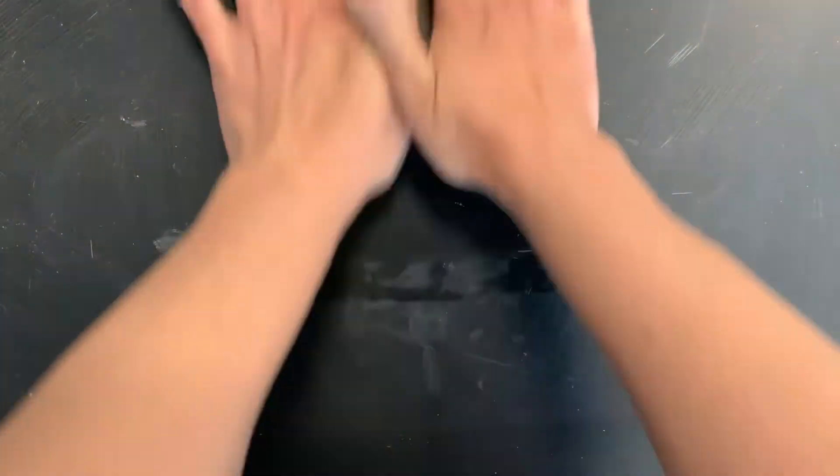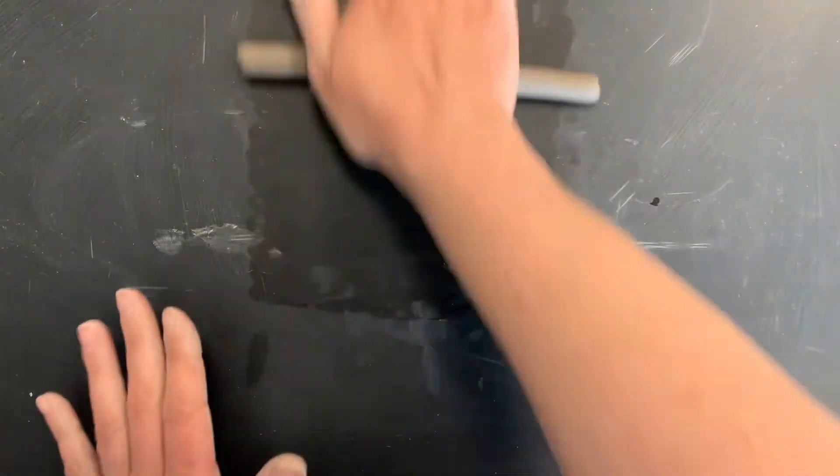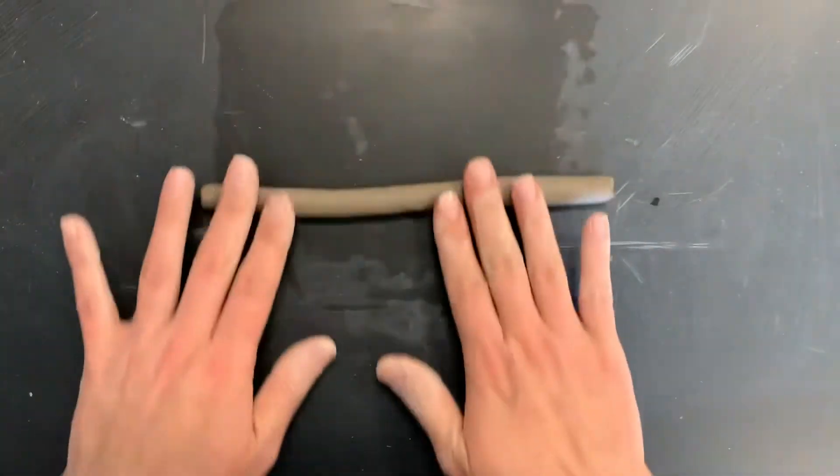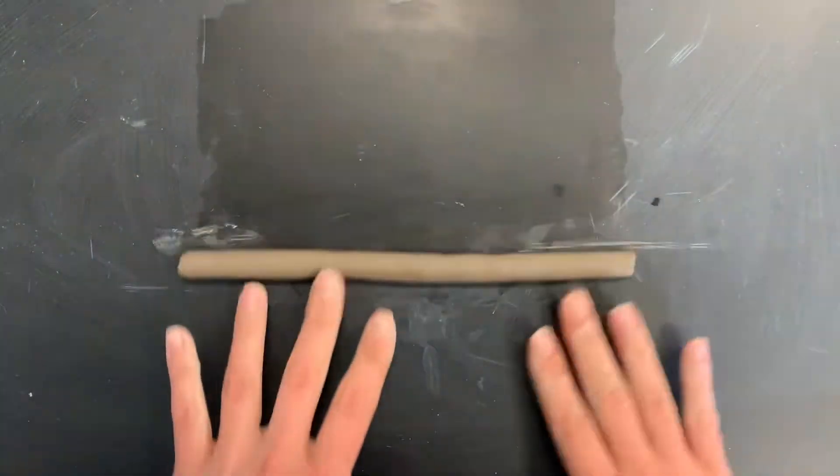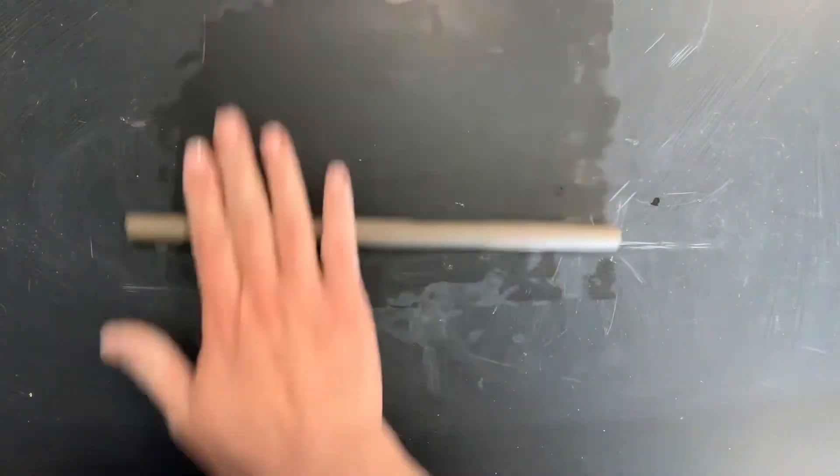You can roll with two hands when it gets long enough. Push down only where you feel the clay is a little thicker. If you get thinner parts of your coil, avoid those parts.